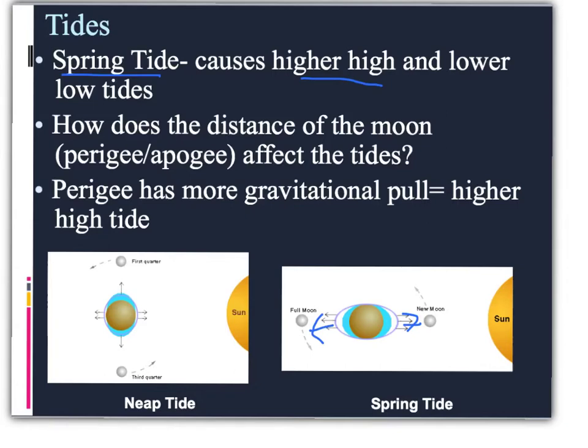Whereas in a neap tide, you have the moon over here and the sun over here, so they're pulling in opposite directions. So there are not as extreme differences between high and low tide during a neap tide.